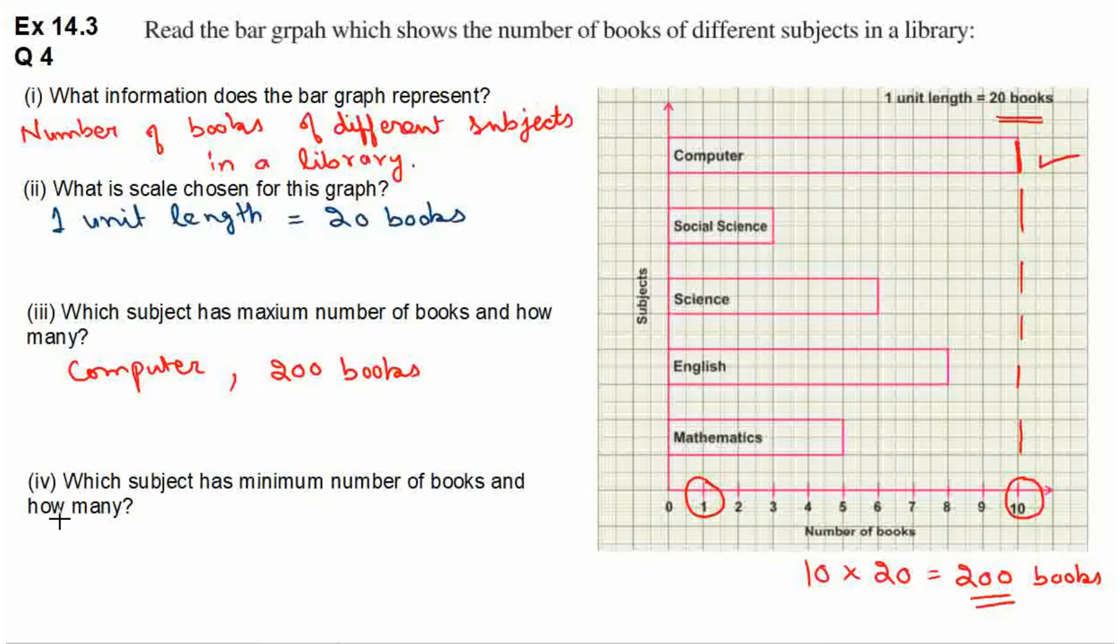4th question hai, which subject has minimum number of books and how many? Kaunse subject ki sabse kam books hai and kitne books hai? So iske liye humne dekhna hai ki kaunse subject ka bar shortest hai. So yahaan par dekho, shortest bar kaunse subject ka hai? Social science ka. So subject name yahaan par aayega social science.